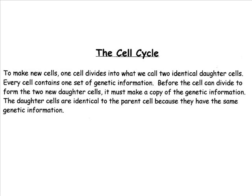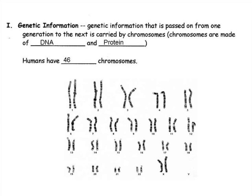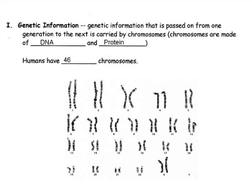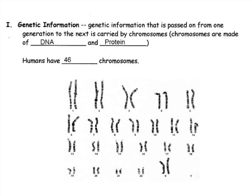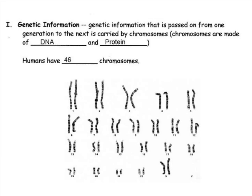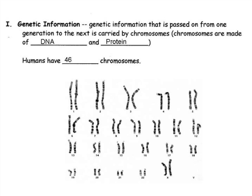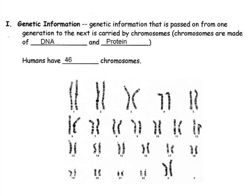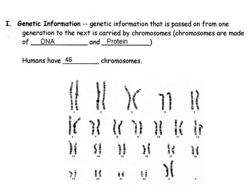The daughter cells are identical to the parent cell because they have the same genetic information. Genetic information that is passed on from one generation to the next is carried by chromosomes. Chromosomes are made up of DNA and protein. Humans have 46 chromosomes. These 46 chromosomes are in pairs and can be arranged in a karyotype. A karyotype is a tool that geneticists use to determine genetic abnormalities or disorders in humans. This karyotype shows 22 autosomes and one set of sex chromosomes for a total of 23 pairs.